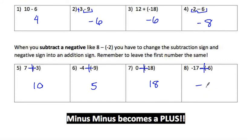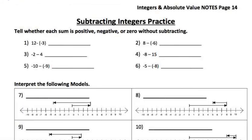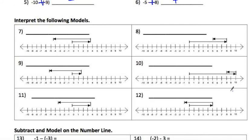Tell whether each sum is positive, negative, or zero without subtracting. The only difference from before is that sometimes you need to change minus-minus to a plus. Do those six quickly. There are your answers for numbers 1 through 6. Now interpret the models like we did on the other page — these don't line up perfectly. Count the first arrow: positive 4 this way. Then backtrack 1, 2, 3, 4, 5, 6, 7, 8 — that should land here. So 4 minus 8 equals negative 4.